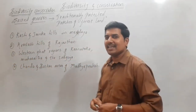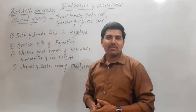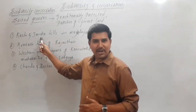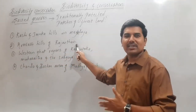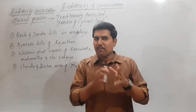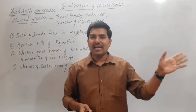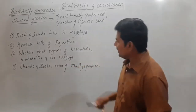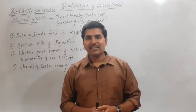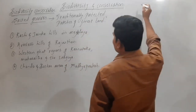Almost all of these areas are called sacred groves — traditionally protected and conserved forest areas. Khasi and Jaintia Hills in Meghalaya are worshipped and protected. The Aravalli Hills of Rajasthan are similarly treated as sacred. In the Western Ghats regions of Karnataka, Maharashtra, and Saurashtra, there are temples and some areas considered ruled by god. Chanda and Bastar areas of Madhya Pradesh are also traditionally protected forest lands we call sacred groves.